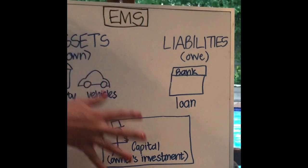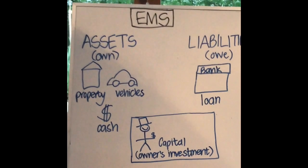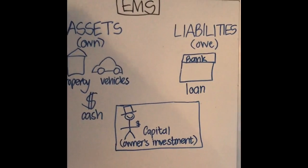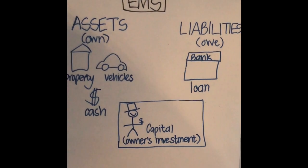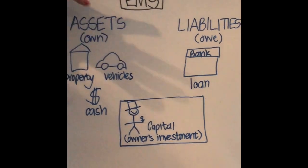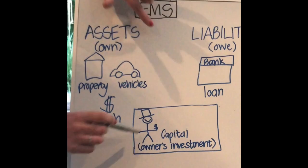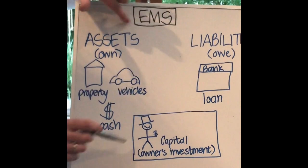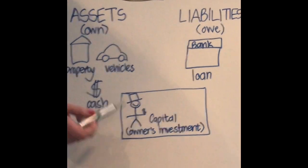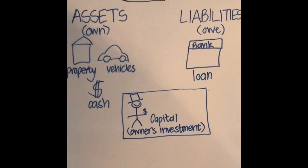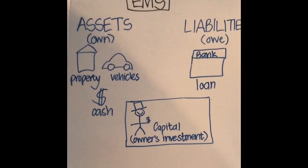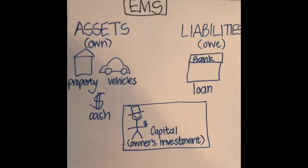So this is what these three concepts mean. But interestingly, there is actually a relationship between them. If you take your assets and look at all the things that you've got, and you want to work out how much did the owner actually put into the business initially, or maybe what is his investment worth now?